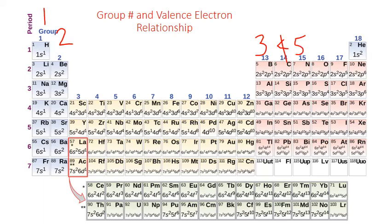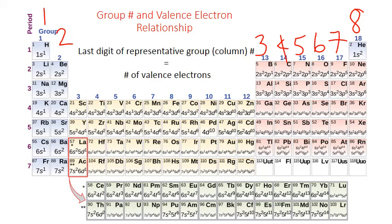So column 15 has five valence electrons, 16 has six, 17 has seven, and 18 has eight. This gives us the general rule of thumb: the last digit or group number for the column equals the number of valence electrons for all of the elements in that particular column. This works for the representative elements.